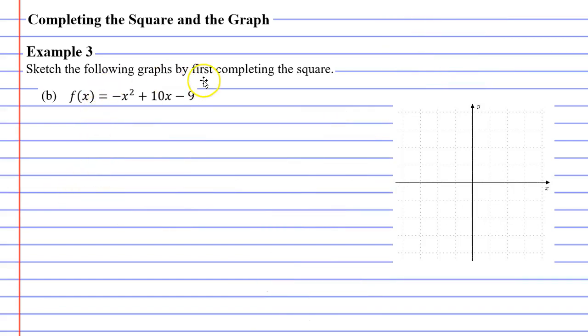Once again, we need to complete the square first, and the good news is we did this in example 1. So when we complete the square for this function, we get -(x - 5)² + 16.